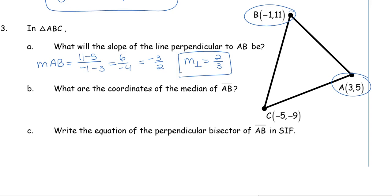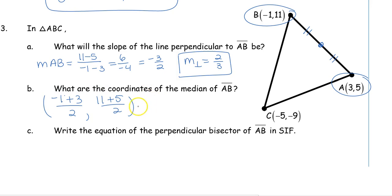Part B asks for the coordinates of the midpoint of AB. We use the midpoint formula: averaging the X's — negative 1 plus 3 is 2, divided by 2 gives 1. Averaging the Y's — 11 plus 5 is 16, divided by 2 gives 8. So the midpoint of AB is at (1, 8).